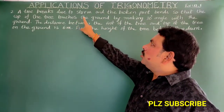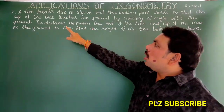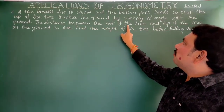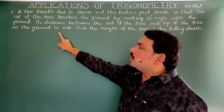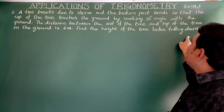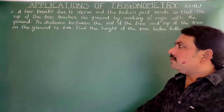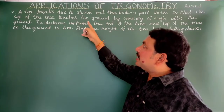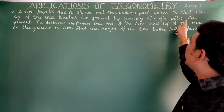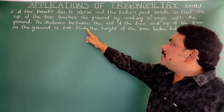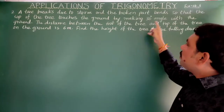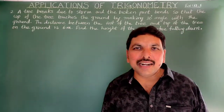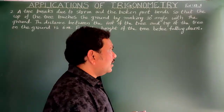Second problem: A tree breaks due to storm and the broken part bends so that the top of the tree touches the ground making a 30 degree angle with the ground. The distance between the foot of the tree and the top of the tree on the ground is 6 meters. Find the height of the tree before falling down.